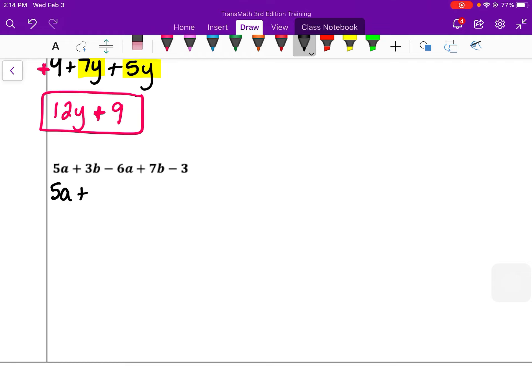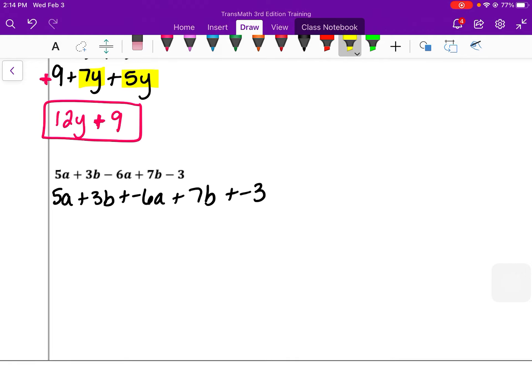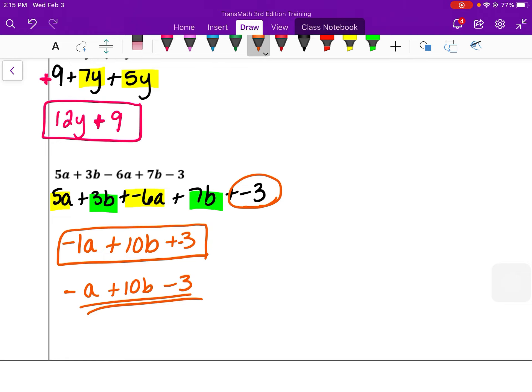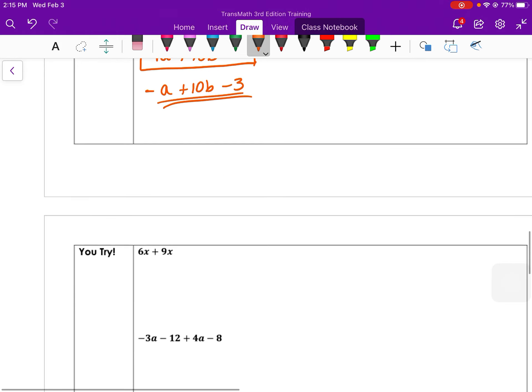So I'm going to rewrite this one. It would be 5a plus 3b plus negative 6a plus 7b plus negative 3. Identify your like terms. I have 5a plus negative 6a. 5 plus negative 6 would be negative 1a or just negative a. And then 3b plus 7b is 10b, positive. So plus 10b. And then we have just this lone constant, so minus 3 at the end. Typically, you'll see this written as just negative a plus 10b minus 3. This is probably the more common way to write that answer.